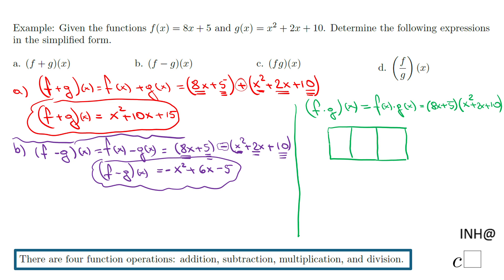I'm going to have three columns and two rows. Two rows because you have the binomial 8x plus 5, three columns because we have the trinomial x squared plus 2x plus 10.